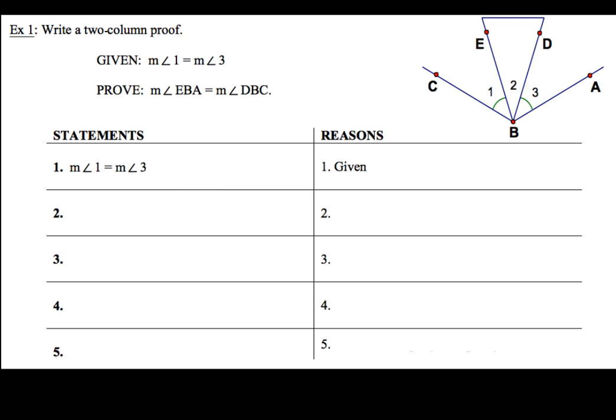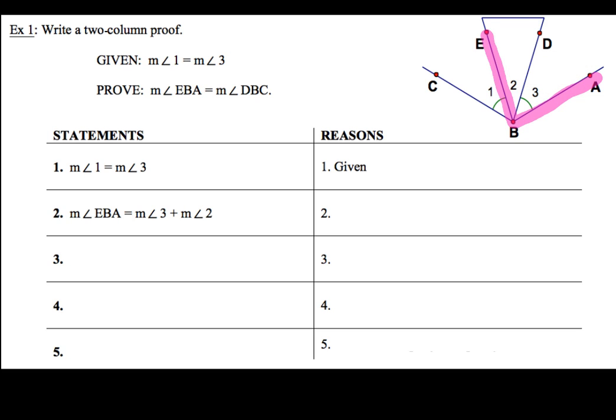For step number 2, we're going to take a look at the measure of angle EBA. If I look at that angle, I can see that it's angles 2 and 3 added up together. The reason for that is going to be the angle addition postulate. So the measure of angle 3 plus the measure of angle 2 equals the measure of angle EBA.